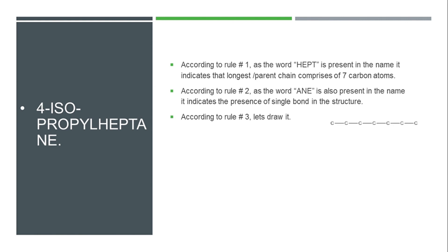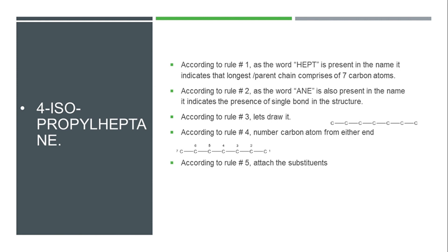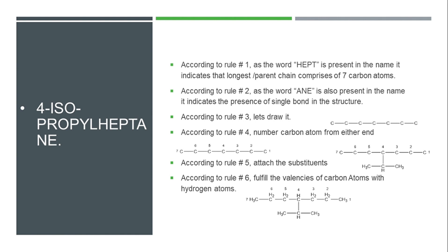The next part is 4-isopropylheptane. After numbering the carbons, we see that an isopropyl group is attached at carbon position 4. According to rule 5, when we attach the isopropyl group at position 4, that forms the carbon skeleton structure. According to rule 6, we fulfill all remaining valences with hydrogen atoms. This gives us the complete structure of 4-isopropylheptane.